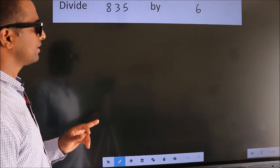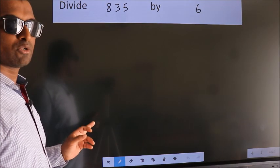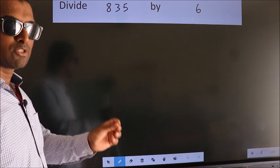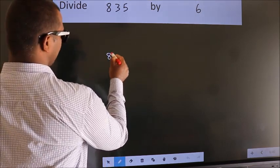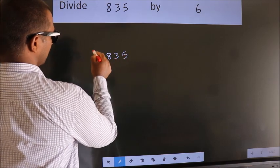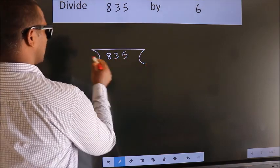Divide 835 by 6. To do this division, we should frame it in this way. 835 here, 6 here.